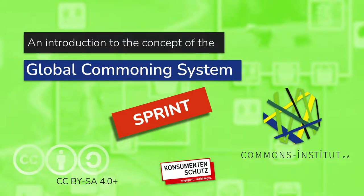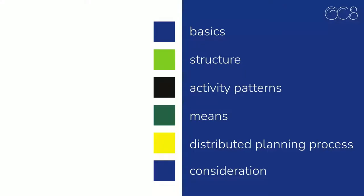Welcome to an introduction to the concept of the global commoning system. This is the sprint version of the lecture — the complete slide set, but with no additional explanations. The lecture is divided into six chapters: Basics, Structure, Activity Patterns, Means, the Distributed Planning Process, and Consideration. Let's start with the basics.